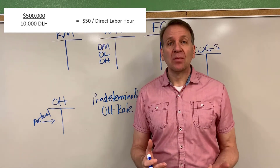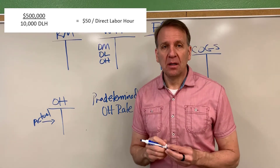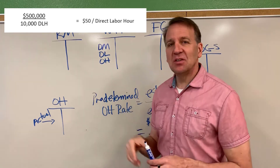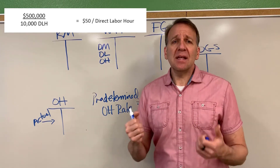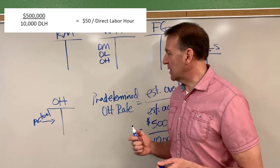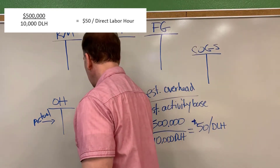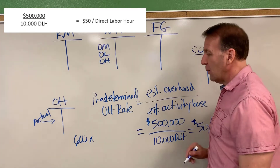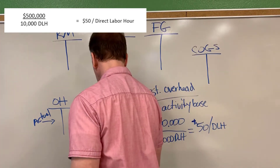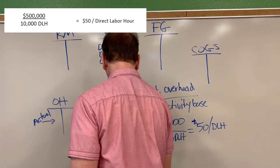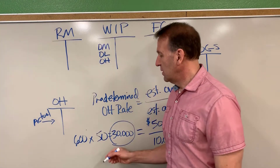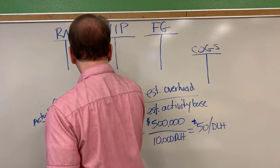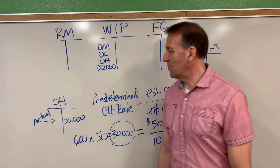Now we've got our rate. So every time we have an hour of direct labor, we're going to take $50 out of overhead and put it into work in process. Let's say in this job we have 600 direct labor hours. So we would take 600 direct labor hours times the rate we just calculated, $50, and that would give us $30,000 — the amount that would transfer out of overhead and into work in process.